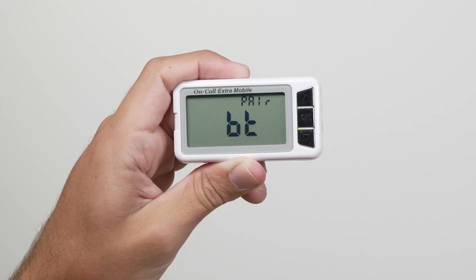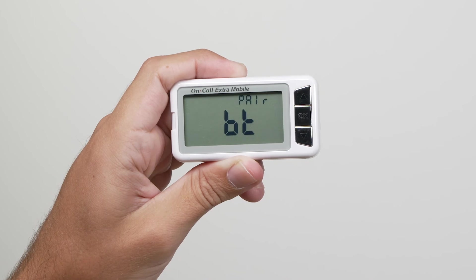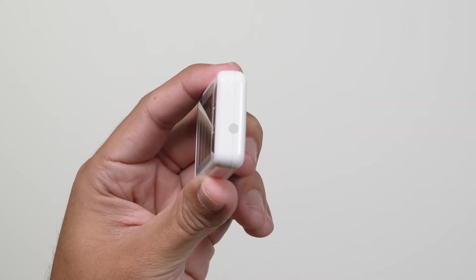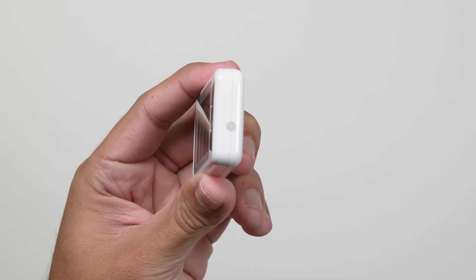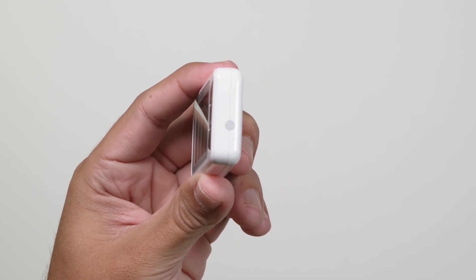In pairing mode, BT displays along with the word pair blinking at the top of the display. The green status light on the side of the meter will also blink to indicate the meter is attempting to connect with the mobile device.